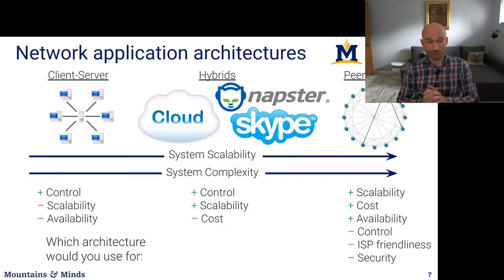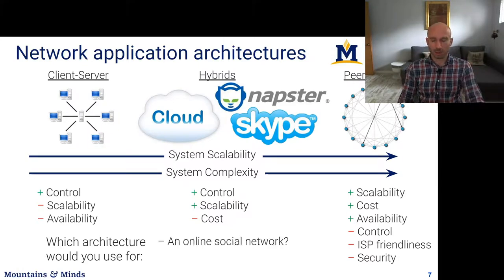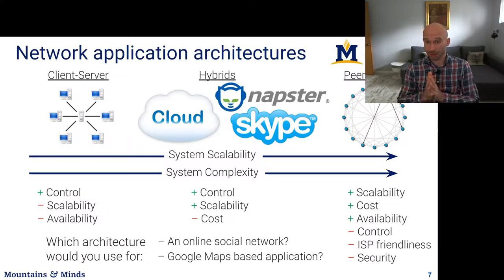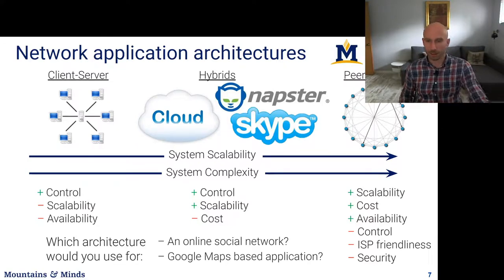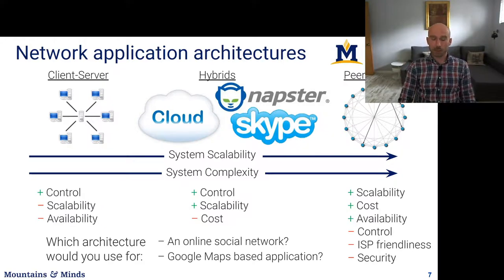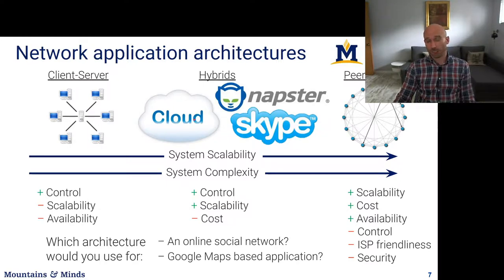A quick question: what architecture would you use to build an online social network? For an online social network, consider the traffic patterns — a lot of users communicate with nearby users. This is part of my PhD work: mostly people in Bozeman communicate with other people in Bozeman; people in England communicate with other people in England. There is locality of interest. So those services are well served by a distributed network of servers — cloud servers in every country or region. A hybrid architecture works very well there.